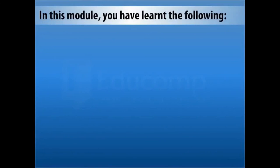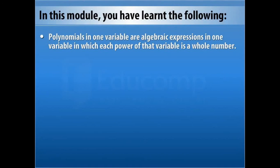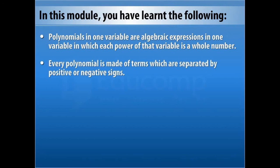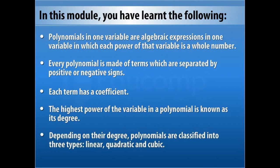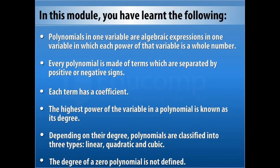In this module you have learned the following: polynomials in one variable are algebraic expressions in one variable in which each power of that variable is a whole number. Every polynomial is made of terms separated by positive or negative signs, and each term has a coefficient. The highest power of the variable in a polynomial is known as its degree. Depending on their degree, polynomials are classified into three types — linear, quadratic, and cubic. The degree of a zero polynomial is not defined.